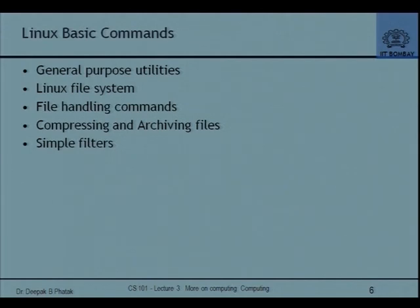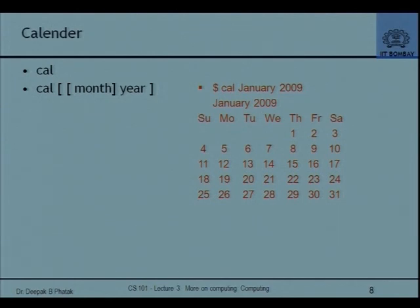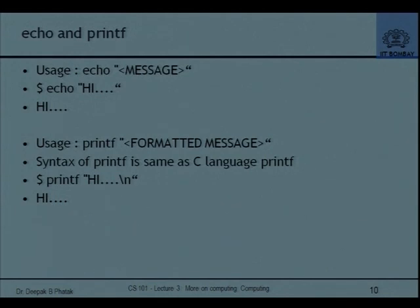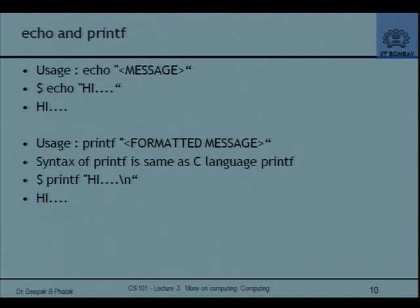Some general-purpose utilities: cal gives you a calendar — for example, 'cal January 2009' gives you the January 2009 calendar. date prints the current date and time in various formats. echo is a command which echoes to STDOUT — anything you say after echo. It is like the English word echo: you go to a mountainous region and shout, and the mountains return the shout. So if you say 'echo this', the monitor echoes it back.